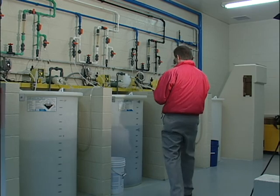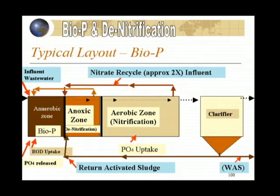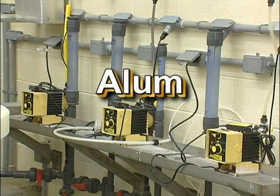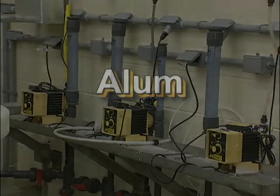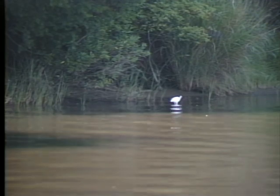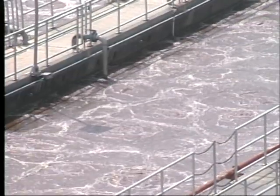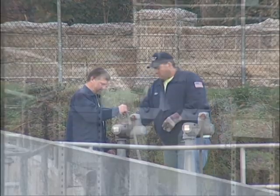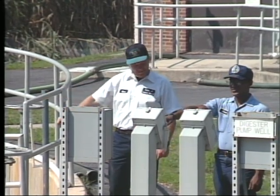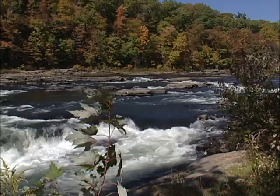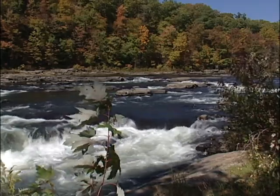Phosphorus can be removed biologically or through chemical precipitation. For biological removal, this is typically accomplished with an upfront anaerobic zone. Chemically, the use of alum can precipitate the phosphorus; other coagulants may be used as well. Nutrients are a fundamental requirement for life, but too many nutrients and life can be threatened. Through the proper operation and maintenance of wastewater treatment systems, under the watchful eye of skilled operators, our water environment is protected and maintained, making our water planet a better place for generations to come.